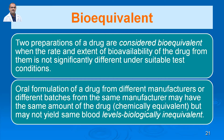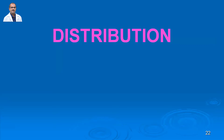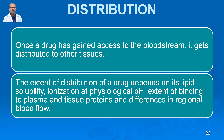The next important term is distribution. Once a drug has gained access to the bloodstream, it gets distributed to other tissues. Whether injected, taken orally, or applied over the skin, the drug is ultimately absorbed into the circulation.